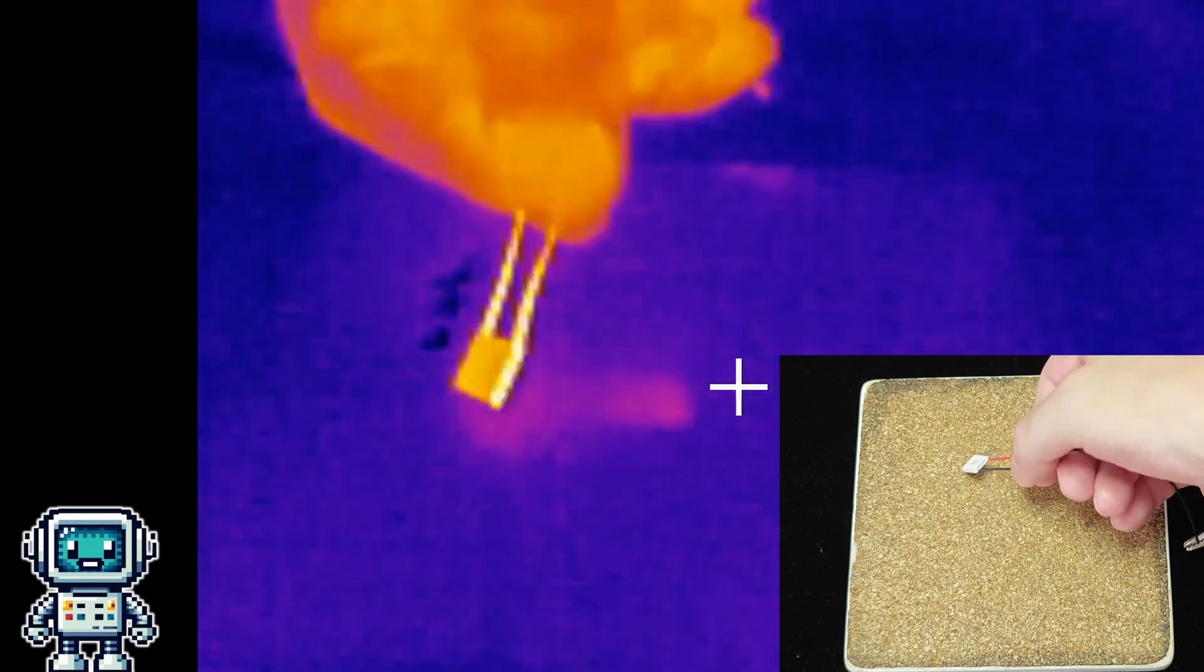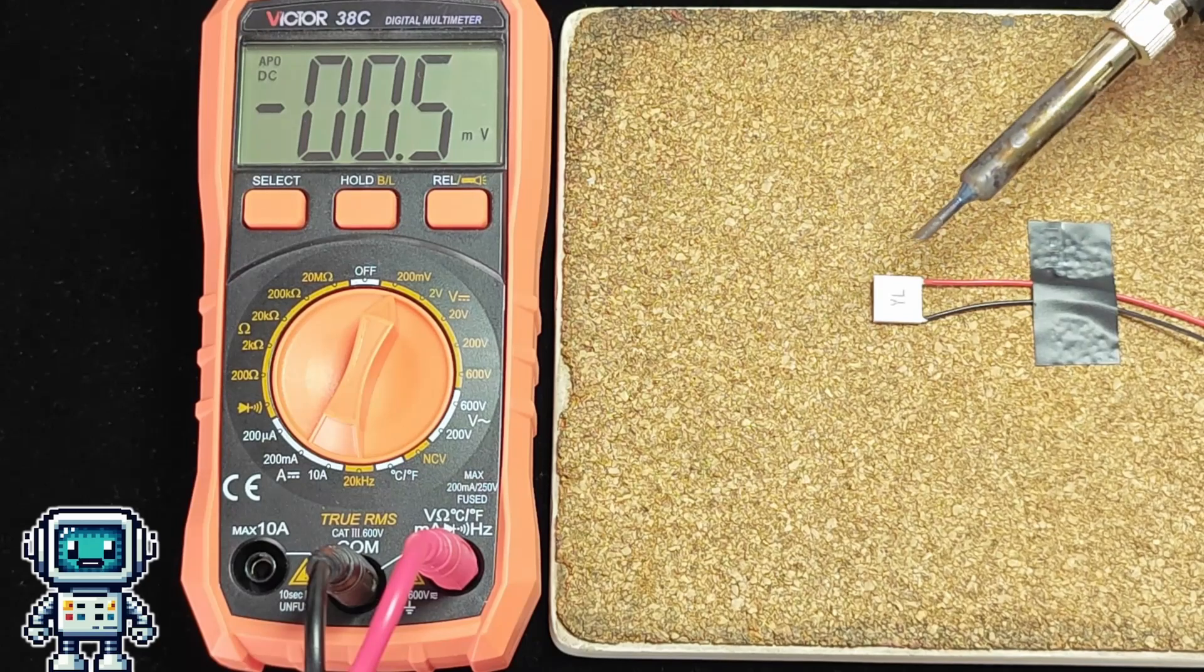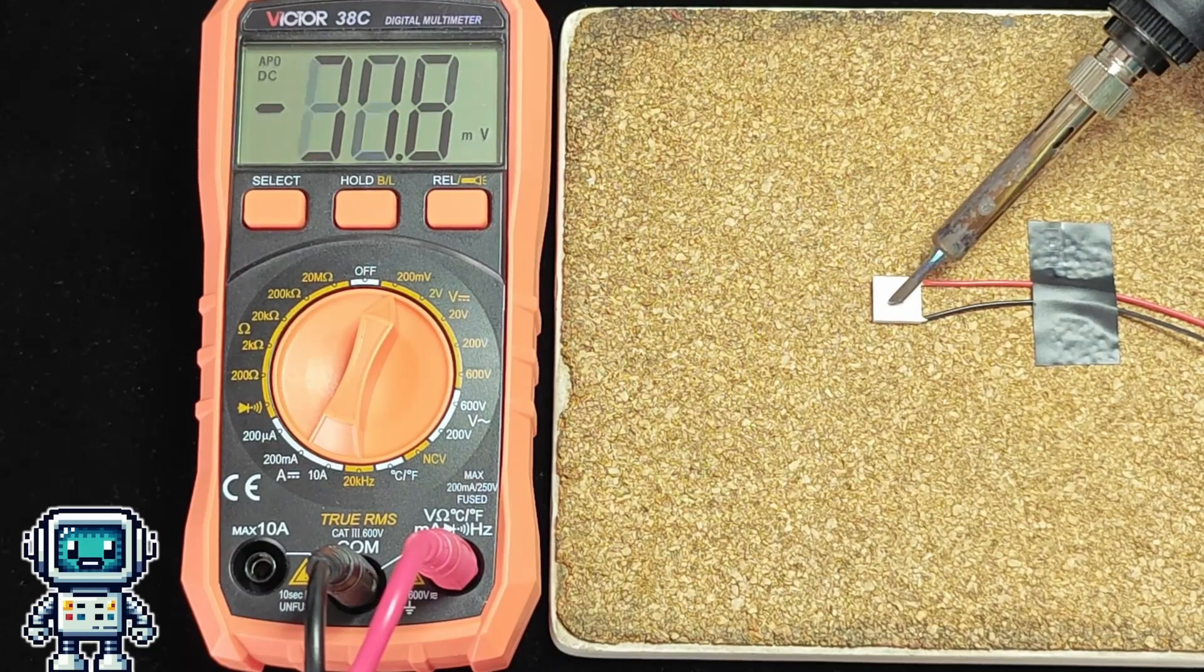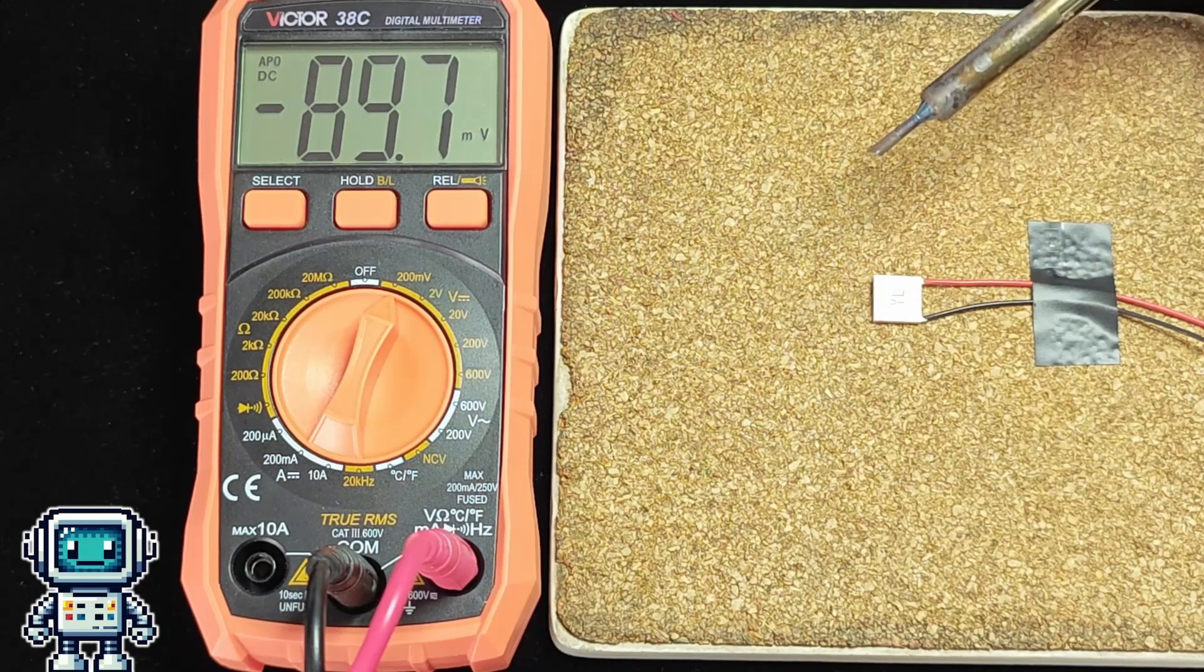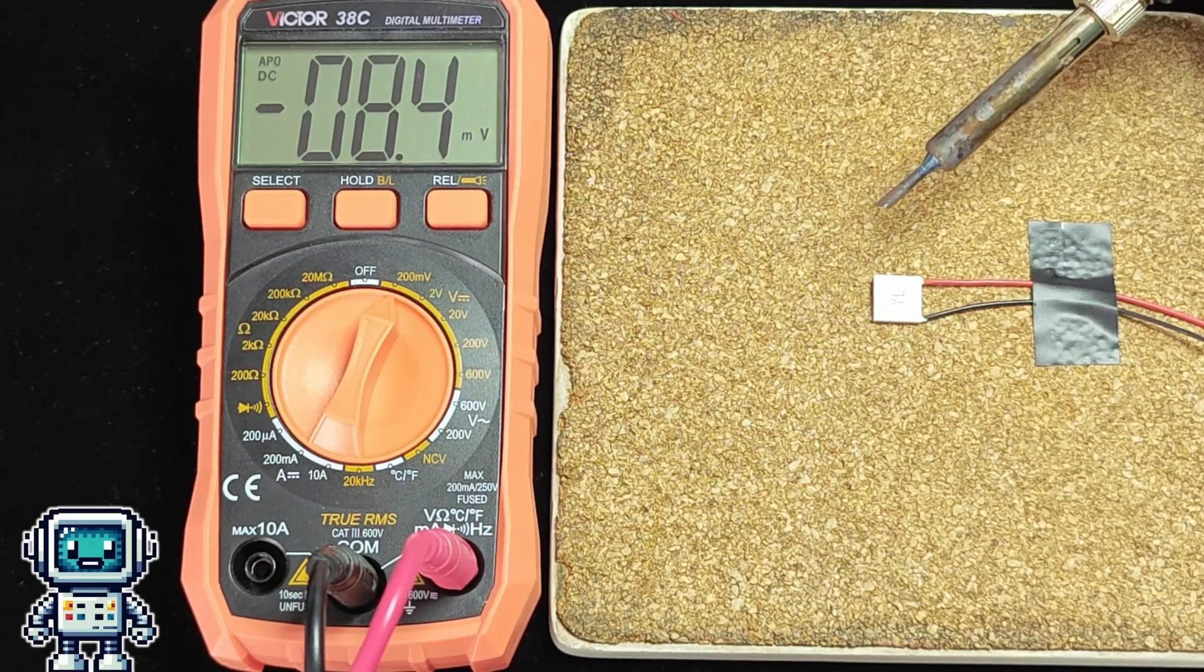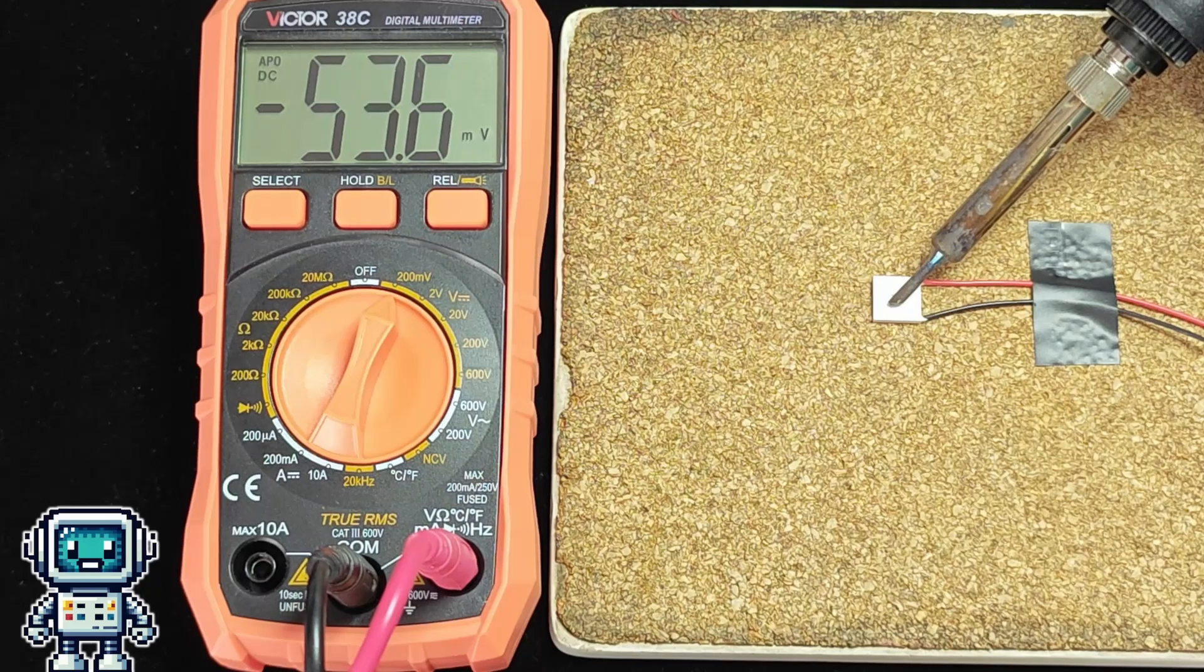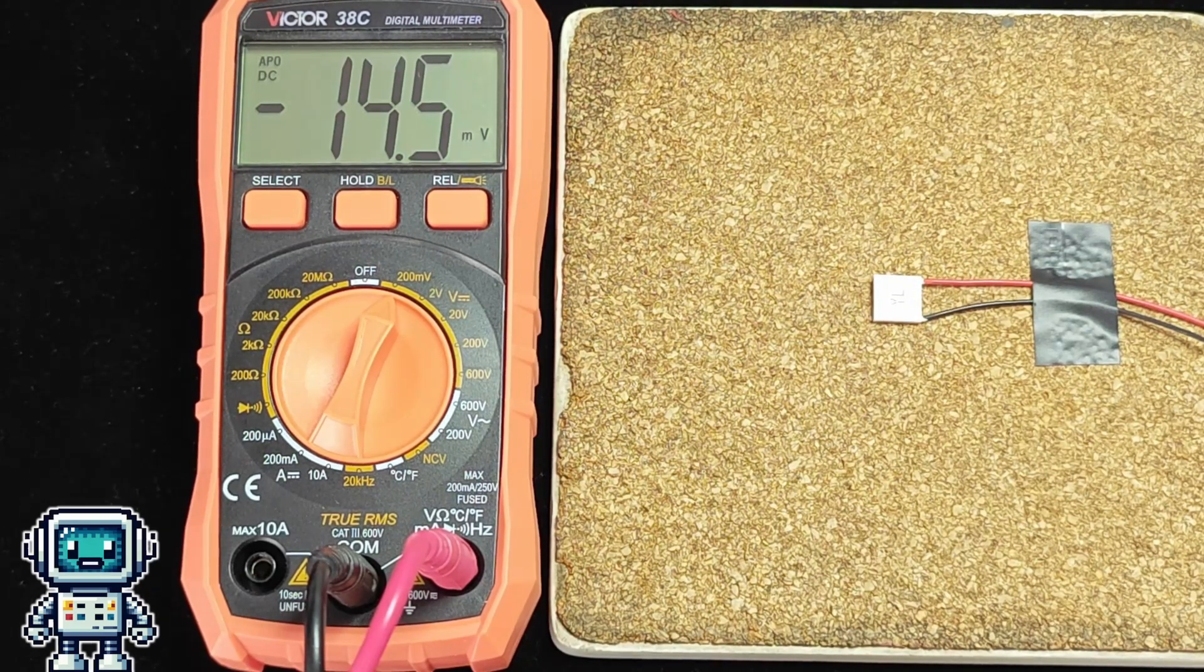It does need to be pointed out though that these devices are horribly inefficient as a refrigeration technology. But this effect is reversible. So if we apply heat or cooling to one side, an electric current will be produced. And this is the basic working principle behind this laser power meter.